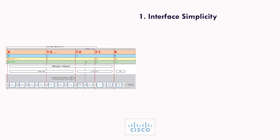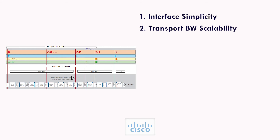Benefit 1 — Interface Simplicity: The transfer of user plane data is based on resource elements or physical resource blocks, which simplifies data mapping and limits the required associated control messages. Benefit 2 — Transport Bandwidth Scalability: In a split 8 implementation, we scale based on the number of antennas — more antennas means more bandwidth. In contrast, with the 7.2x split, scaling is based on streams, so we don't need to account for a higher number of antennas when calculating transport bandwidth.